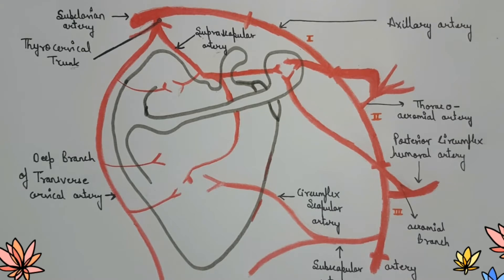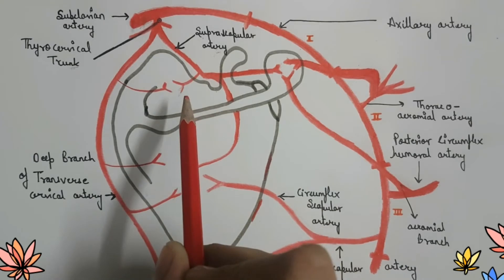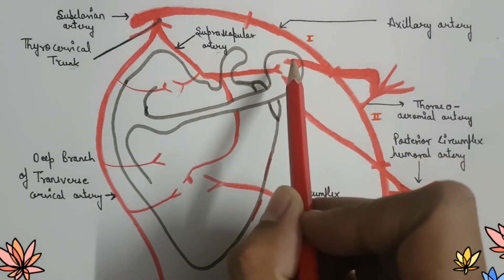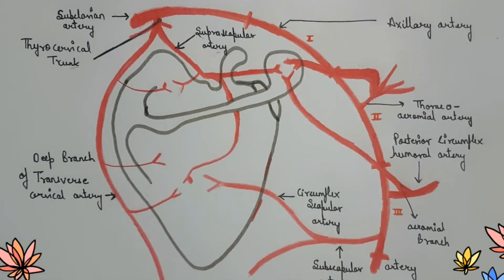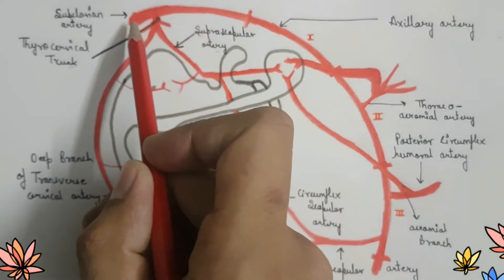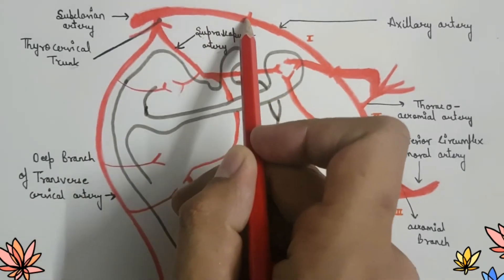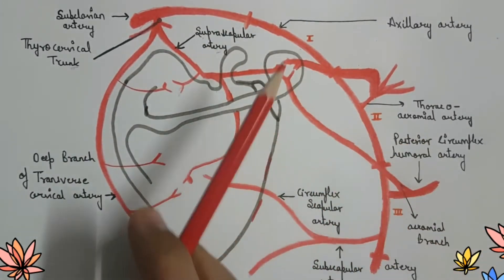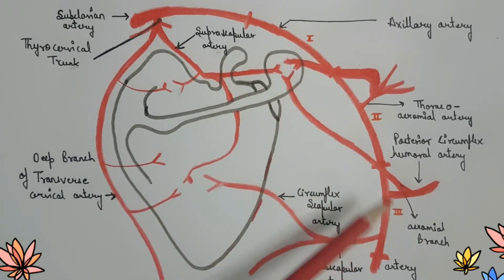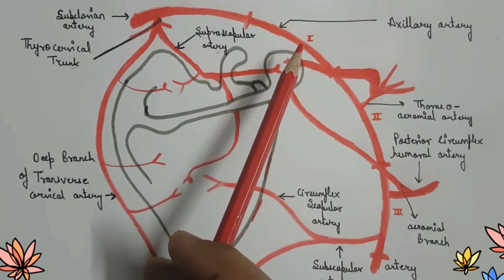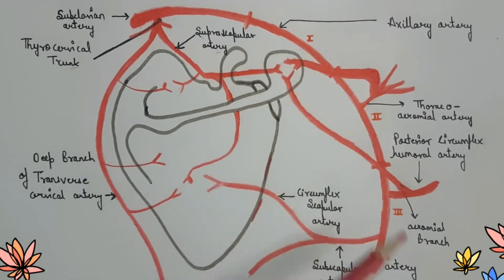Anastomosis over the scapula is divided into two regions: over the fossa and over the acromion process. The heart gives off the left and right subclavian arteries. The subclavian artery continues to form the axillary artery, which is further divided into first, second, and third parts respectively. We are also familiar with the branches given off by the first, second, and third parts.